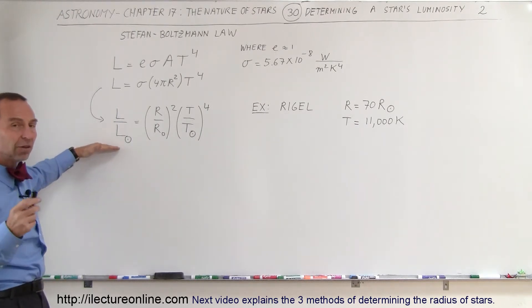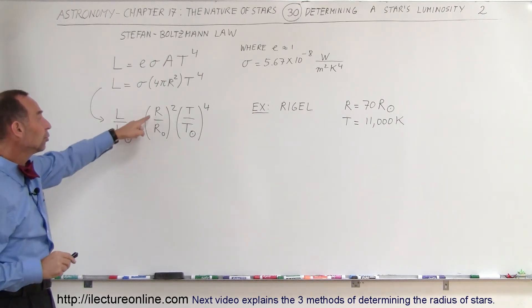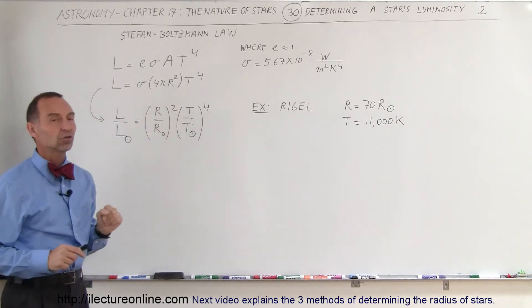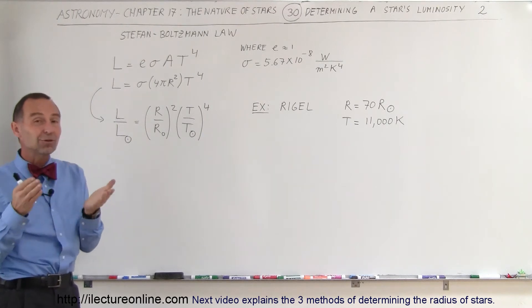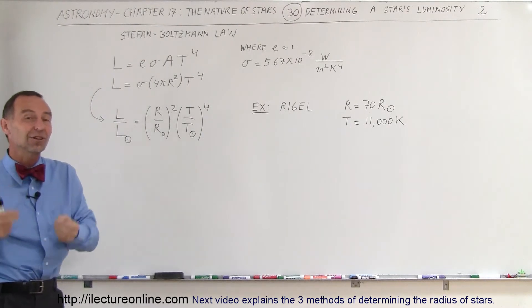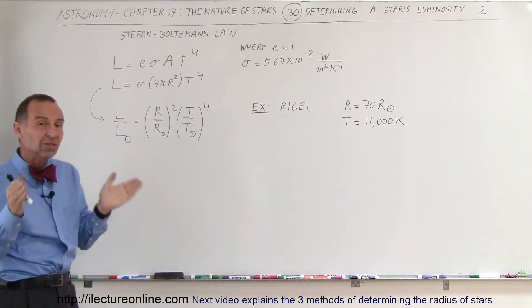We can find the luminosity of any star as long as we know the radius and the temperature. Finding the radius and temperature of a star is not exactly as easy as it looks, but we can get reasonably close.